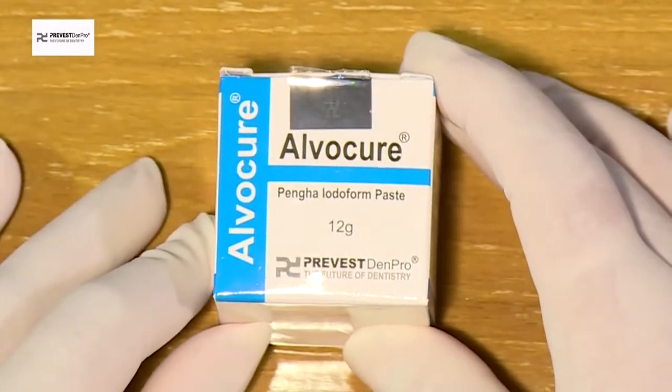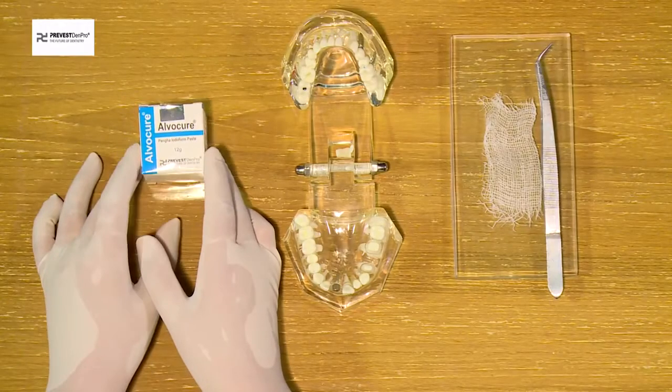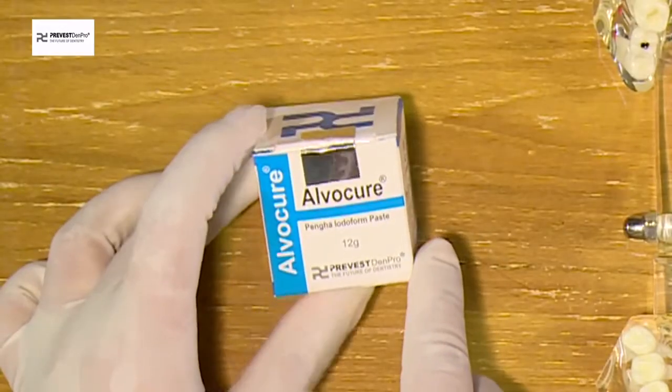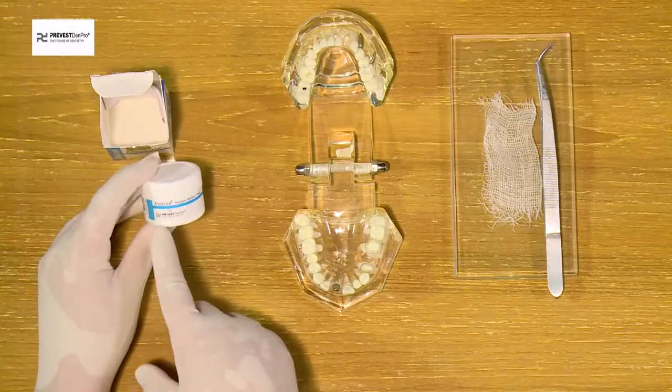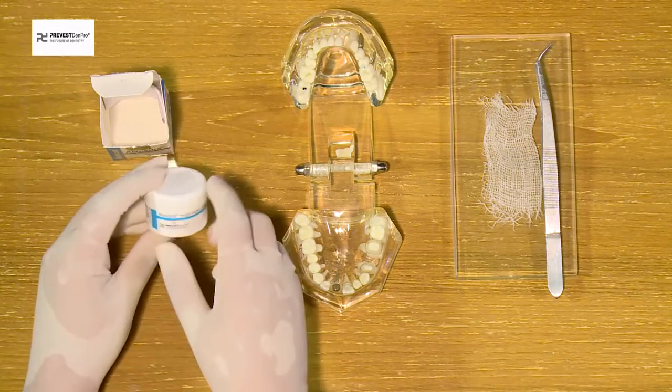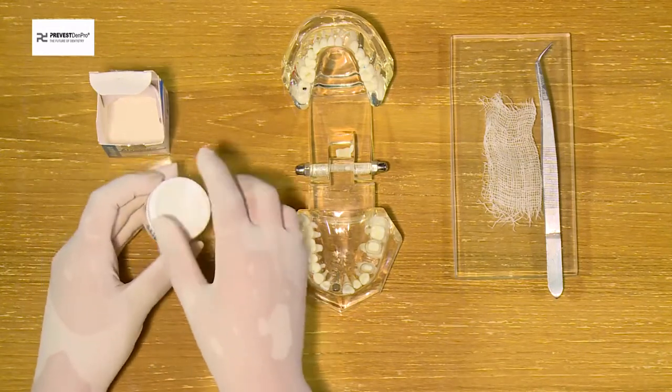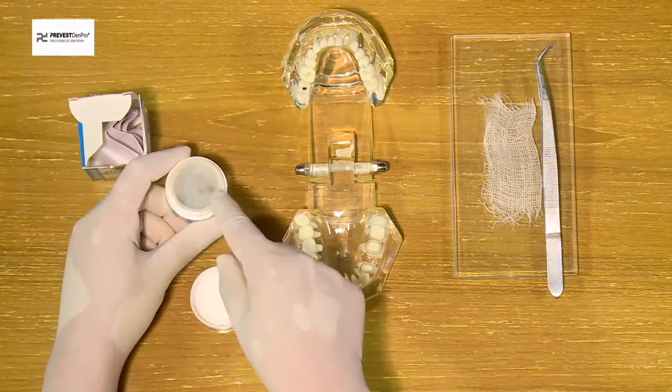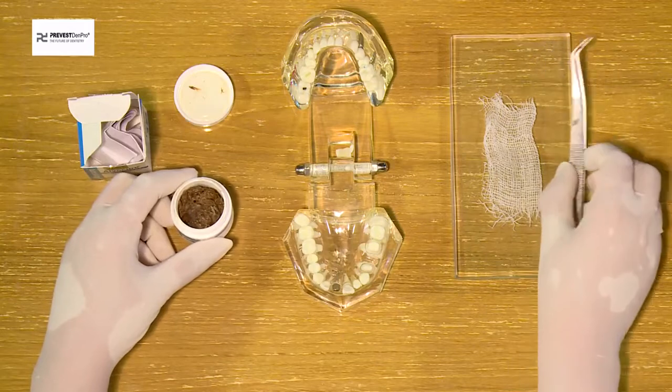Alvo Cure is a dry socket paste manufactured by Prevest Denpro Limited. It consists of 12 grams of medicament in an airtight container. It includes an instructional manual and the container has a safety lid.